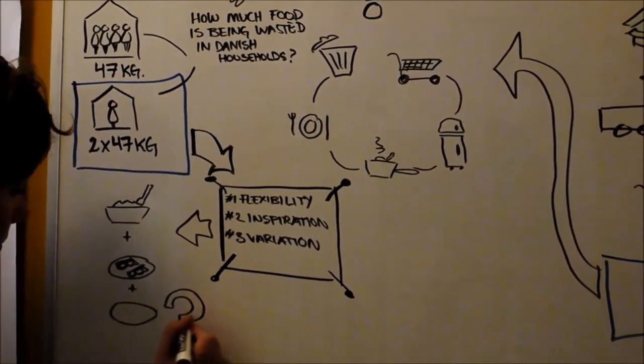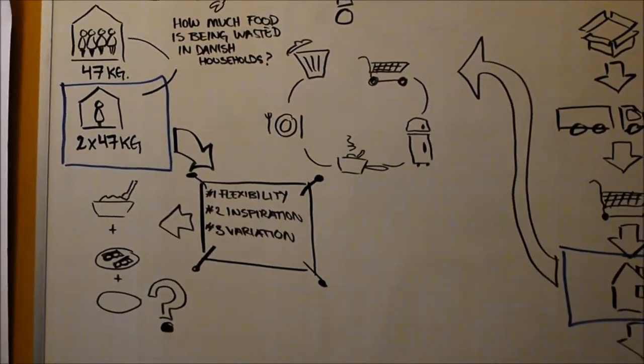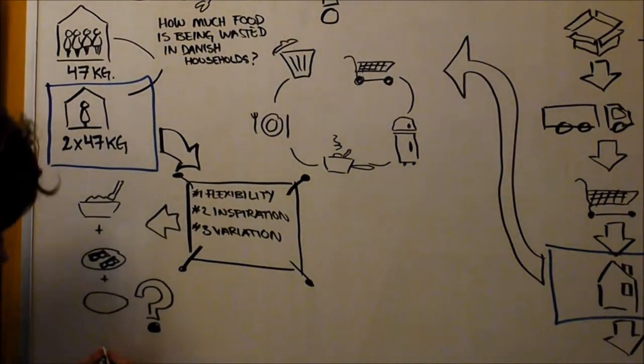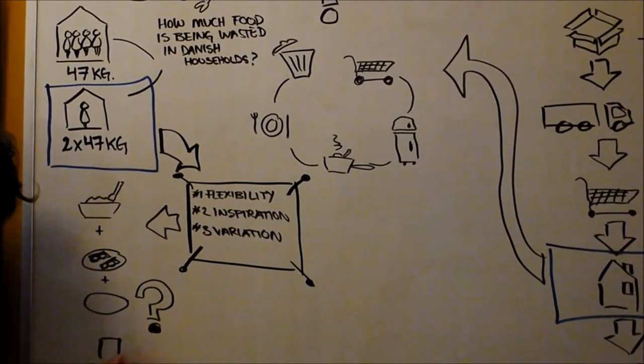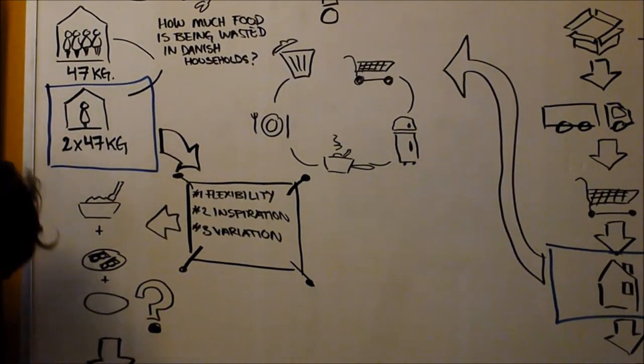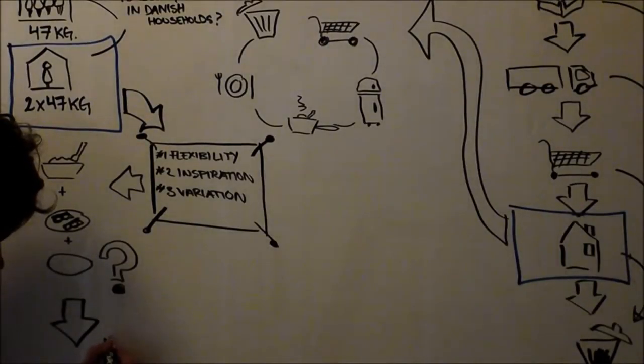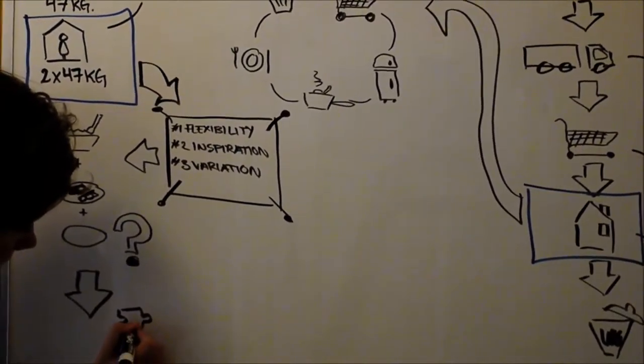Dinner is the real wild card. It's the meal that changes the most, where students are most involved in cooking, and also where the most food is being wasted. Dinner gets more experimental and spontaneous, resulting in many different ingredients that they might only know how to use in one specific way.